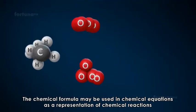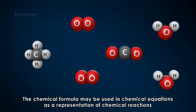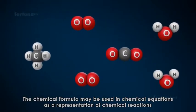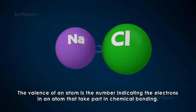The chemical formula may be used in chemical equations as a representation of chemical reactions. The valence of an atom is the number indicating the electrons in an atom that take part in chemical bonding.